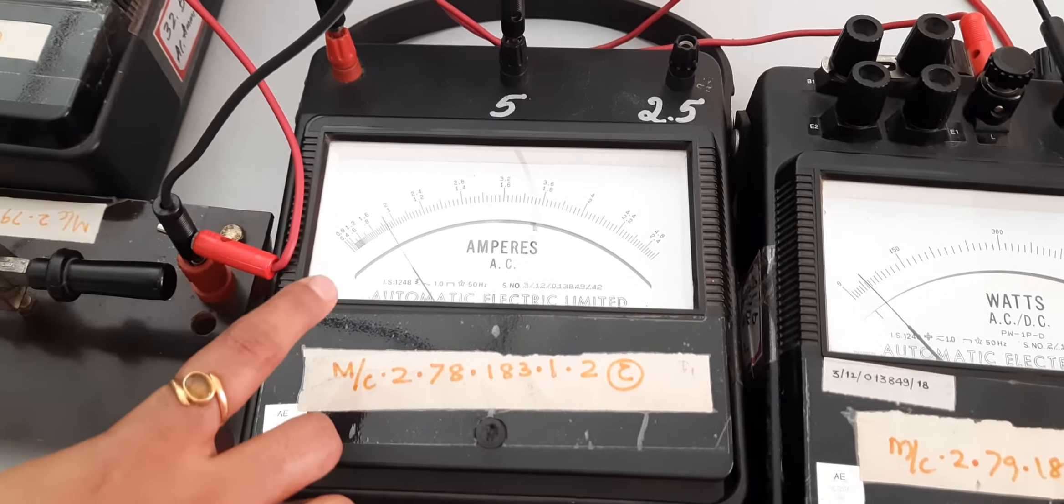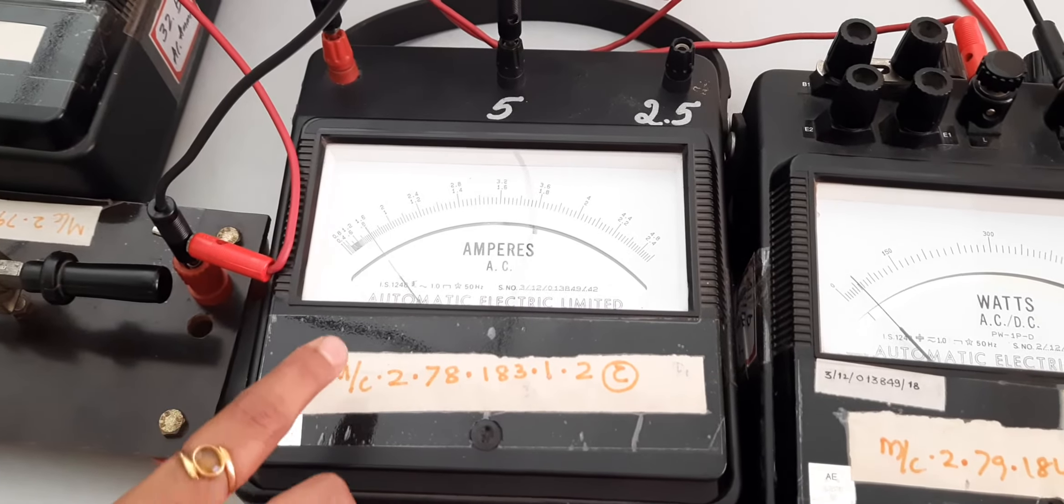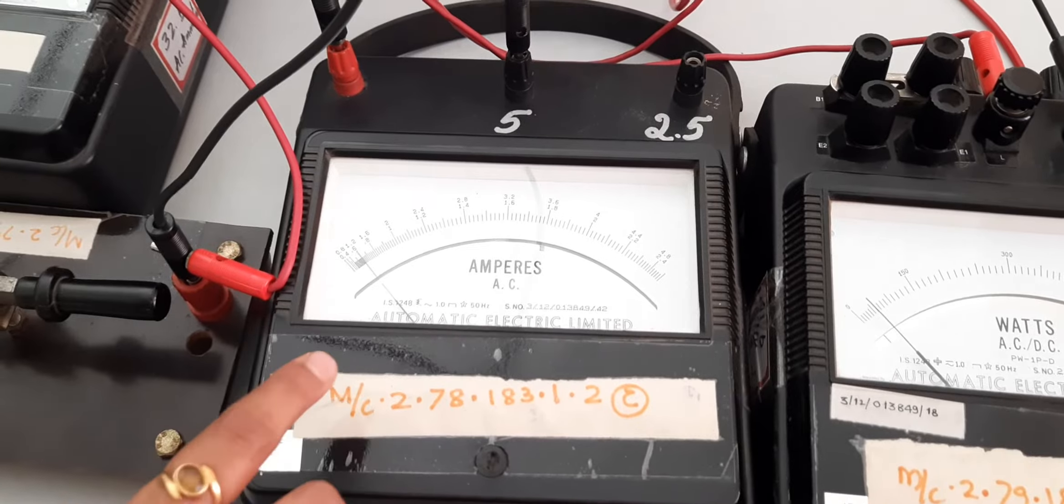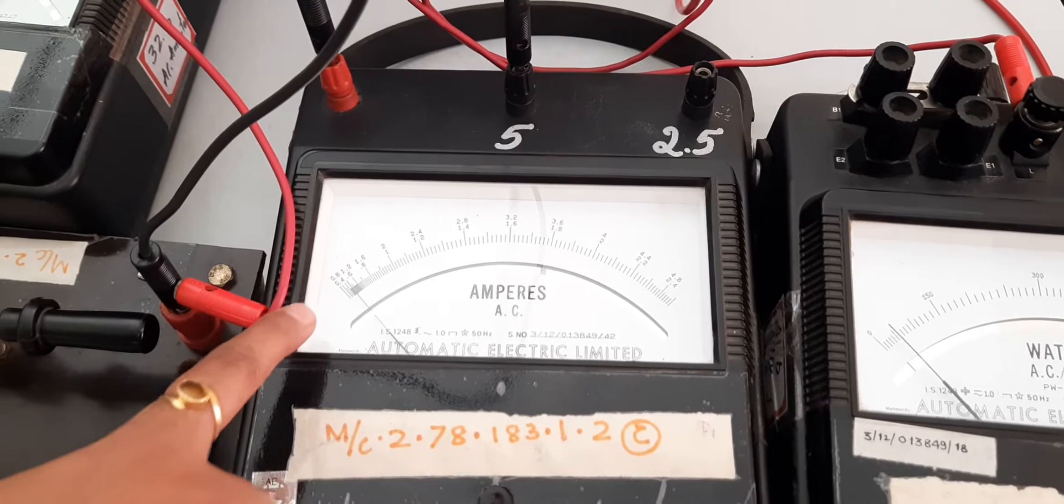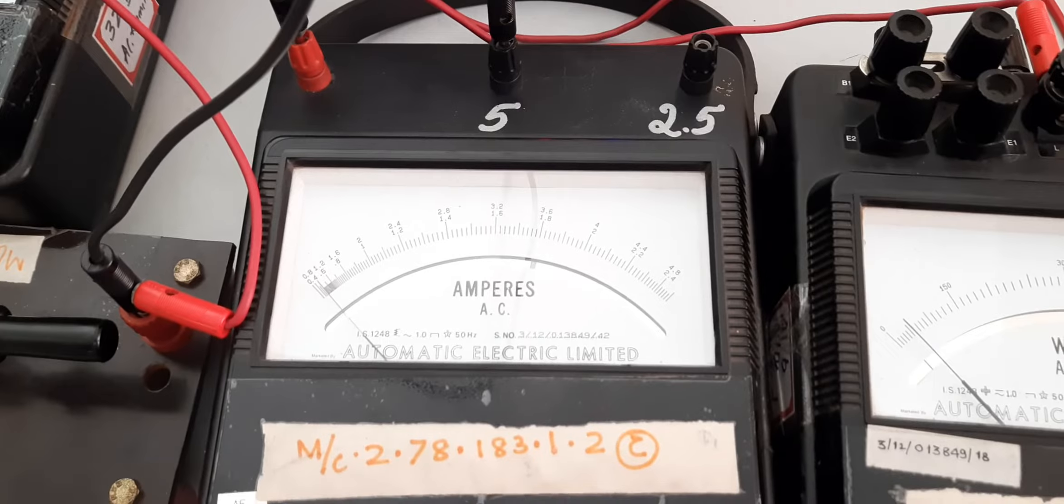Now the armature current is decreasing. So once the armature current decreases, we can see that the armature current has reached below 1 amp.